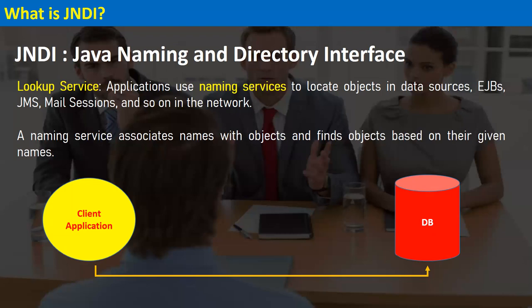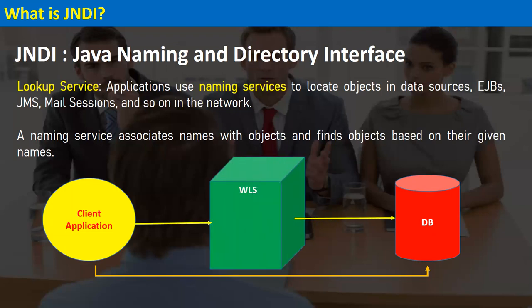In WebLogic server or any application server, we have a connection pool data source. The application connects to the database with the help of a data source created on the WebLogic server — for example, 'data source one'. But how does the application connect with the data source? It is done with the help of a JNDI name. When we create a data source, we define a JNDI name — for example, it could be jdbc/demoCon.